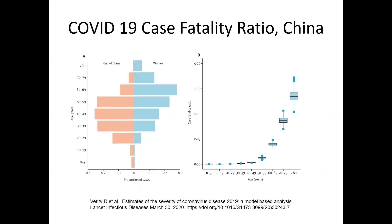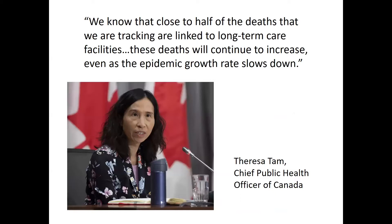Looking at mortality, 94% of deaths in Canada are in age groups 60 and above. This aligns with data from China showing very significant case fatality ratios moving up through age ranges: 60 to 69, 70 to 79, and over 80.